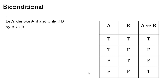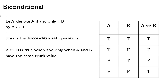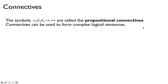The biconditional, denoted by a double arrow, is true when and only when A and B have the same truth value — both true or both false. If they have different values, the biconditional is false. So we have now seen five connectives: negation, OR, AND, implication, and biconditional. These are called propositional connectives, used to connect sentences and form more complex sentences.